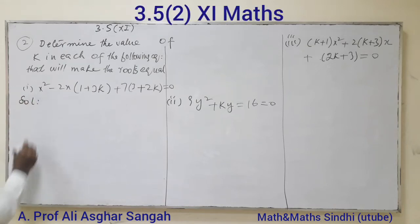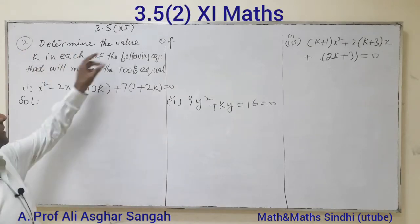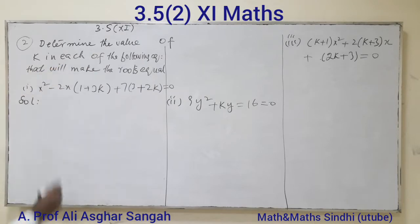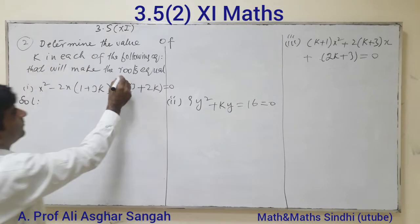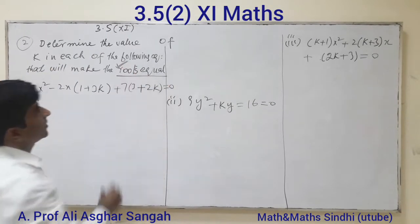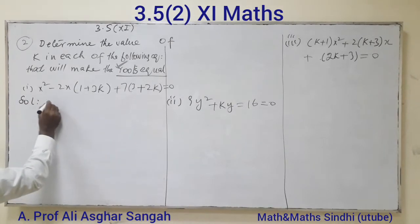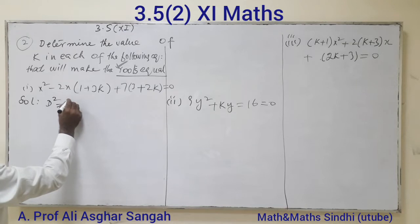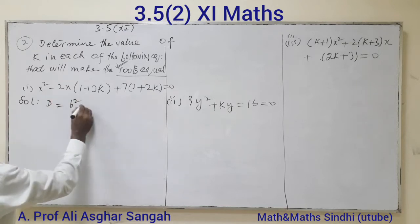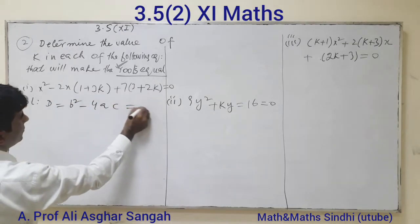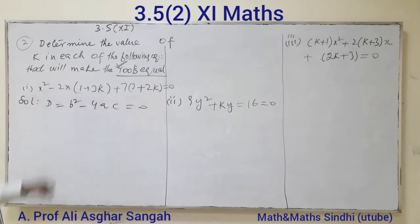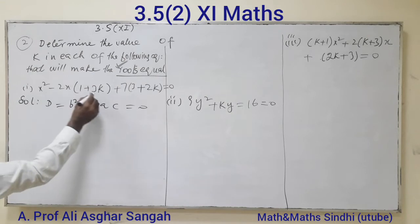Solution to question number 2: Determine the value of K in each of the following cases that will make roots equal. For roots to be equal, D equals zero, where D equals b squared minus 4ac equals zero. Let's find the value of K.